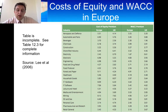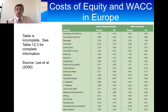We can see that different industries have different weighted average costs of capital. Not only that, but in Europe there are differences from the UK — by and large the UK tends to have a lower cost of capital than Europe, though it's not always the case.